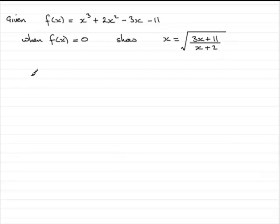Well, first of all, to do this, what I'm going to do is we'll start with this statement here, when f(x) equals 0. So therefore, what we've got is f(x), which is x cubed plus 2x squared minus 3x minus 11. That's going to equal 0.